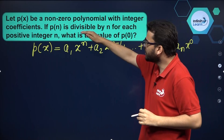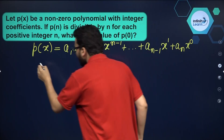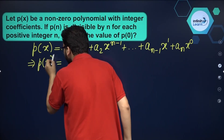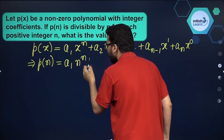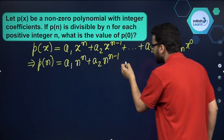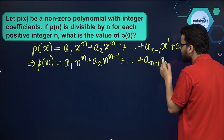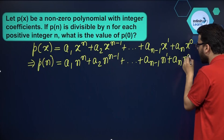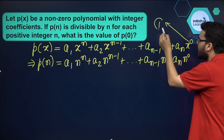It is given that P of n is divisible by n for each positive integer n. So let's find the value of P of n first. In place of the variable x we put n: a1 n raised to the power n, plus a2 n raised to the power n minus 1, plus dot dot dot, up till a(n-1) n raised to the power 1, plus aₙ n raised to the power 0. Now n raised to the power 0 is 1 only.